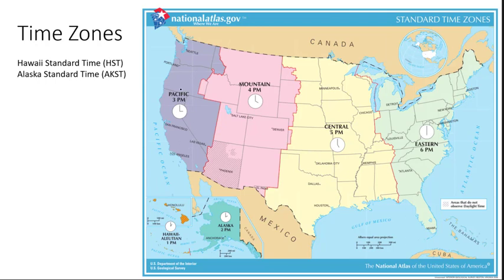After the Pacific time zone is the mountain time zone, named because it's over by the Rockies where many mountains are. Then further east is the central time zone, and further east still is the eastern time zone — the east coast and everything over to Indiana. So those are your six time zones, and each one differs by one hour.